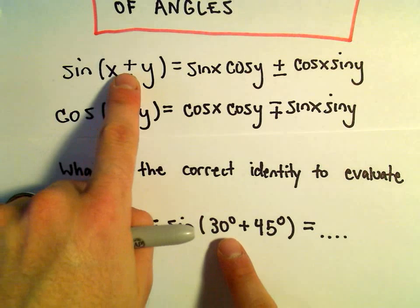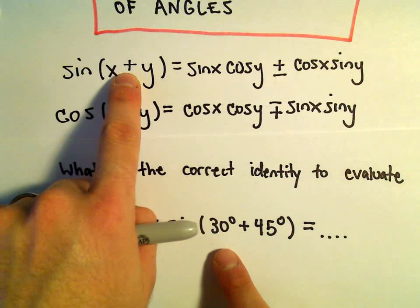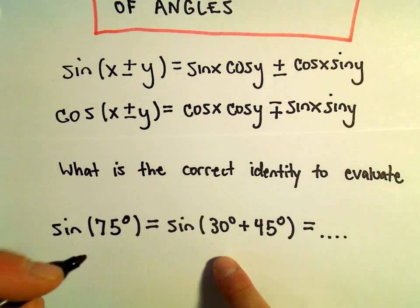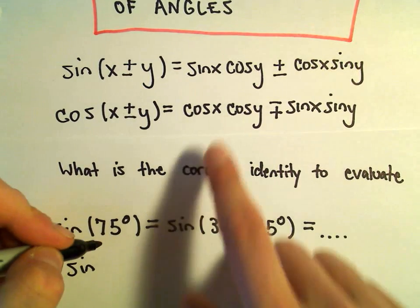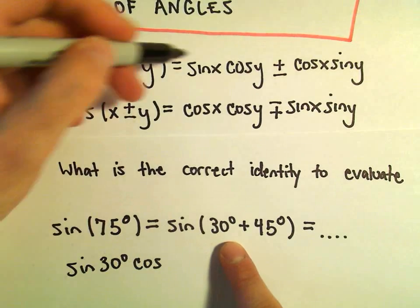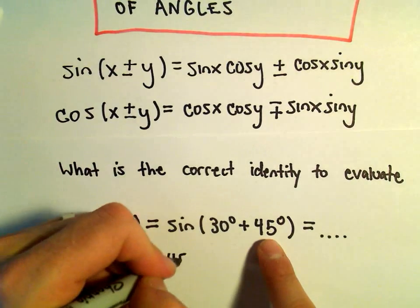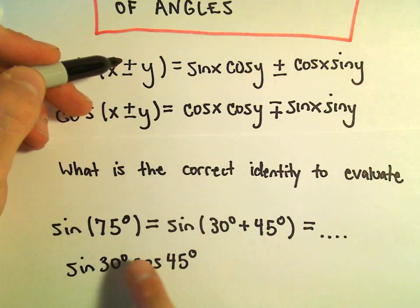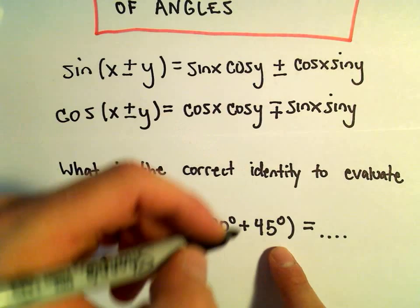We can write 75 degrees simply as 30 degrees plus 45 degrees. And now it says I have sine of something plus something. So I'm going to use this first identity that says I would get sine of the first thing, which is going to be 30 degrees, times cosine of the second, which is going to be 45 degrees. And then since it's a plus sign, we keep our plus sign.